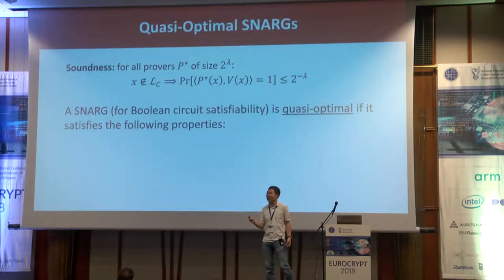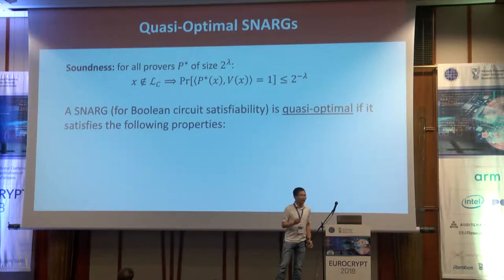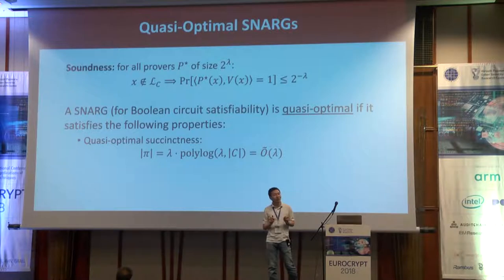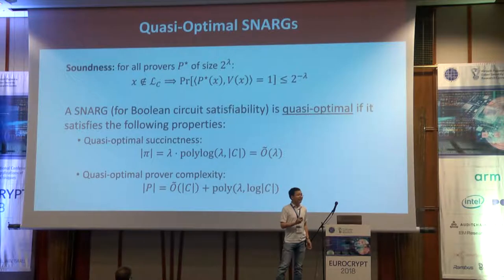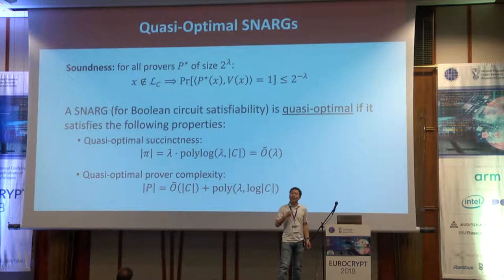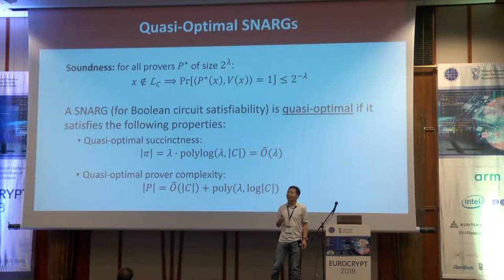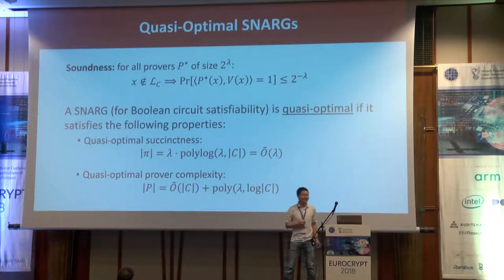A quasi-optimal SNARK simultaneously minimizes the proof length as well as the prover complexity up to polylogarithmic factors. Concretely, the proofs should be quasi-optimally succinct: the length of a proof is only quasi-linear in the security parameter, which is sufficient to achieve λ bits of soundness. In addition, the amount of work the prover invests to generate a valid proof should scale only quasi-linearly with the size of the circuit. We do allow an additive term that grows polynomially in the security parameter and polylogarithmically with the circuit size.